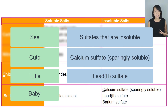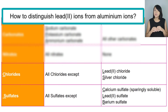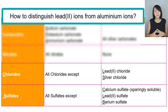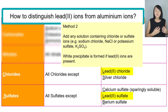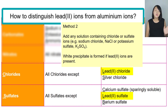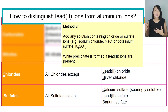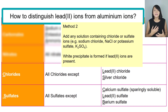To distinguish aluminium ions from lead(II) ions, we apply this solubility rule. Adding any solution containing sulfate or chloride ions, only lead(II) ions will form a precipitate. If a precipitate forms, we confirm the cation is lead(II). If no precipitate forms when we add a solution containing sulfate or chloride ions, we confirm the cation is aluminium.